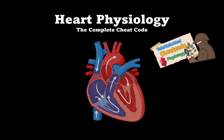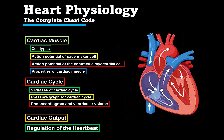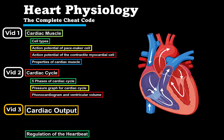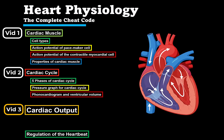TimeTaxMed here. Let's continue our complete cheat code for heart physiology. We're doing this in four segments. The first video was about the different types of cardiac muscle, the action potentials of pacemaker cells and contractile myocardium, and the general properties of our cardiomyocytes. In the second video, we looked in detail at the cardiac cycle. In this video, we're going to cover everything you need to know regarding cardiac output. And in the next video, we'll cover the regulation of the heartbeat, covering all the most important mechanisms that actually change the contractility and the heart rate.